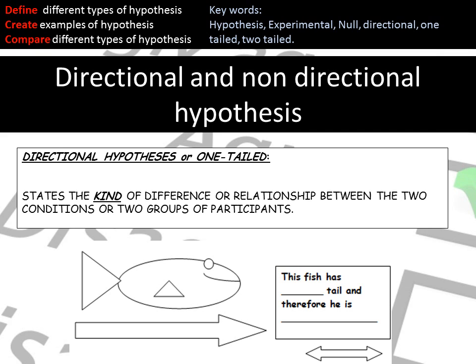We have different types of hypothesis: directional and non-directional. A directional hypothesis is also called a one-tailed hypothesis — it tells you the direction of the effect the IV will have on the DV. For example, 'girls will be more obedient than boys' would be a directional hypothesis.